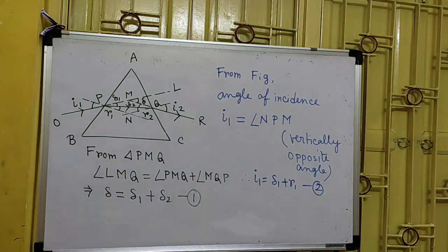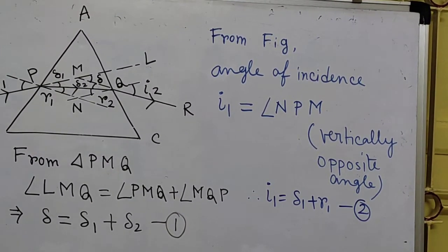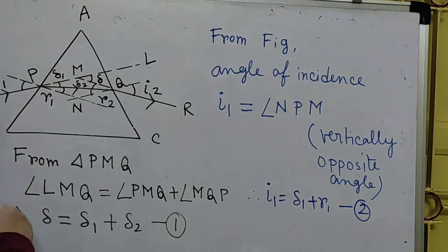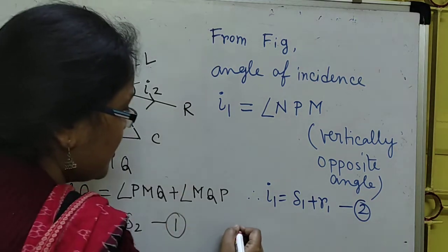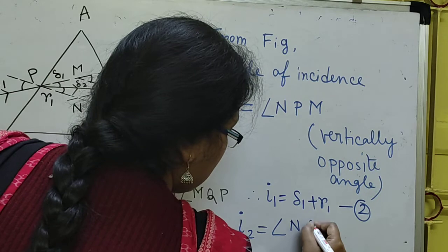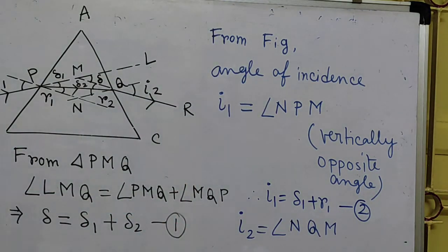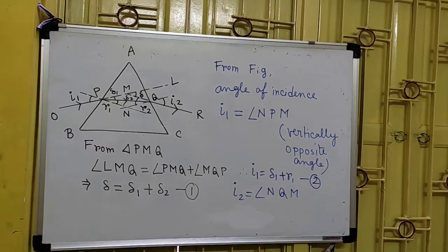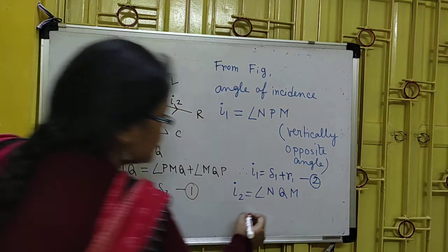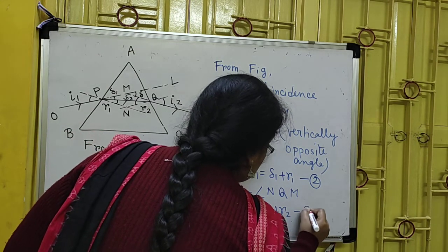The same thing is happening here also. In this next case, I am enlarging it. This emerging ray and its angle are vertically opposite to angle NQM. So from figure, angle I₂ should equal angle NQM. Now if you see carefully, angle NQM is basically delta 2 plus R2. So I₂ equals delta 2 plus R2. That is equation 3.